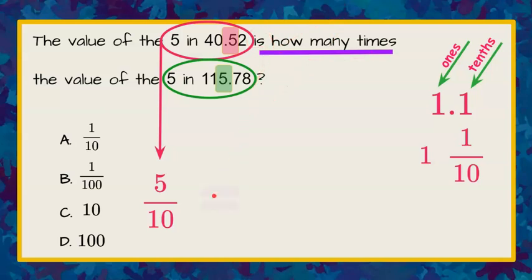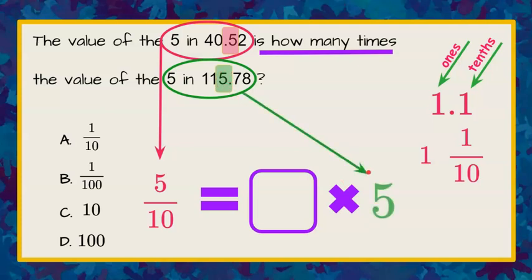When we talk about is that means equal to in math. This is equal to an unknown number times the value of this five. Well that's in the ones column so it's just five. So we're asked what number times five is equal to five tenths?